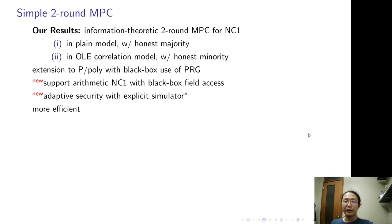So let me finish the talk by recapping our result. We construct information theoretical two-round MPC in two settings. They can be extended to p-poly with black box use of PRG. As you just saw, our constructions are arithmetic and only use black box field operations. I didn't show the adaptive security in the talk. In our paper, there is an explicit, efficient, modular, and also black box field arithmetic adaptive simulator.